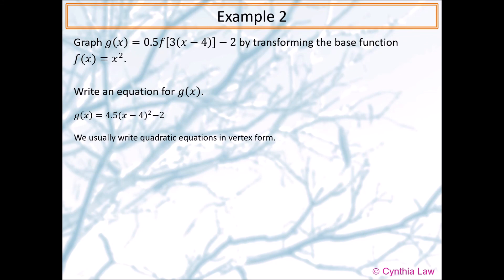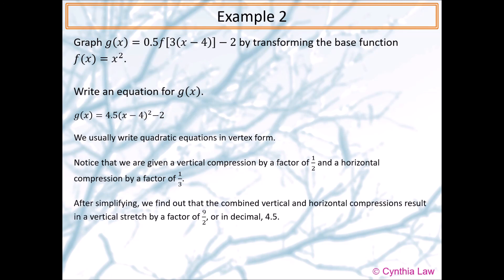We usually write quadratic equations in vertex form. Notice that we are given a vertical compression by a factor of 1/2 and a horizontal compression by a factor of 1/3. After simplifying, we find out that the combined vertical and horizontal compressions result in a vertical stretch by a factor of 9/2, or in decimal, 4.5.